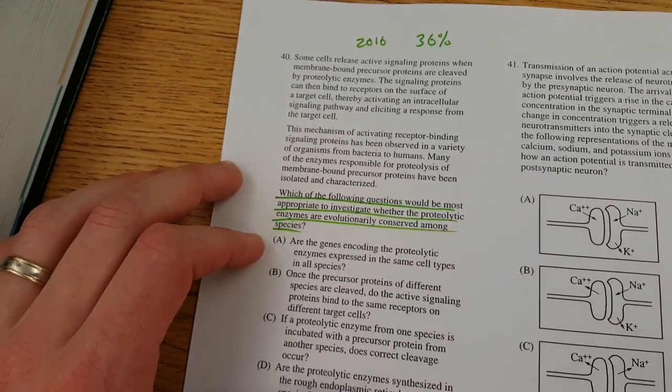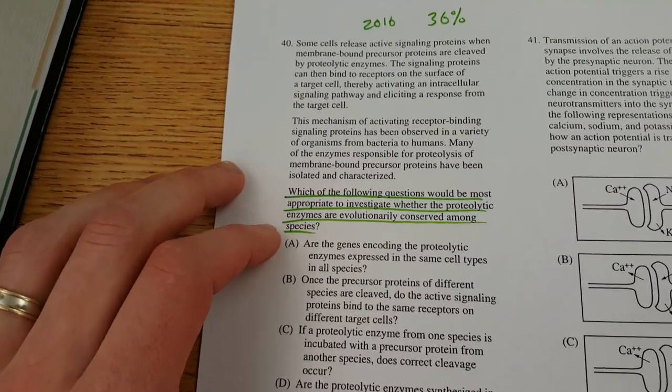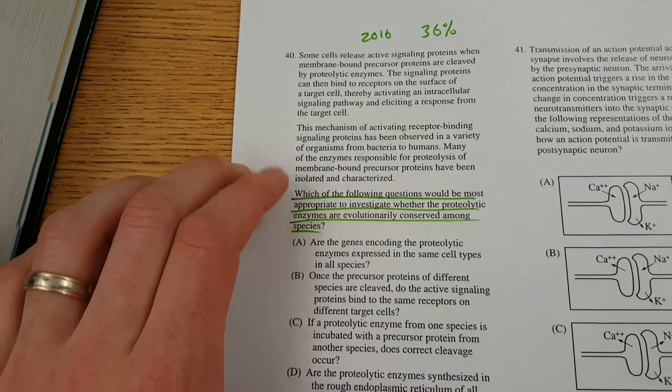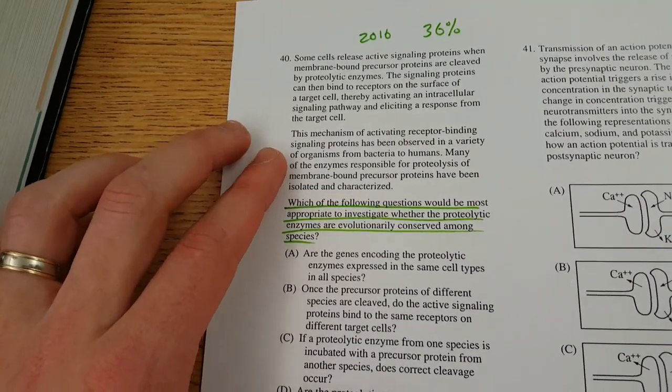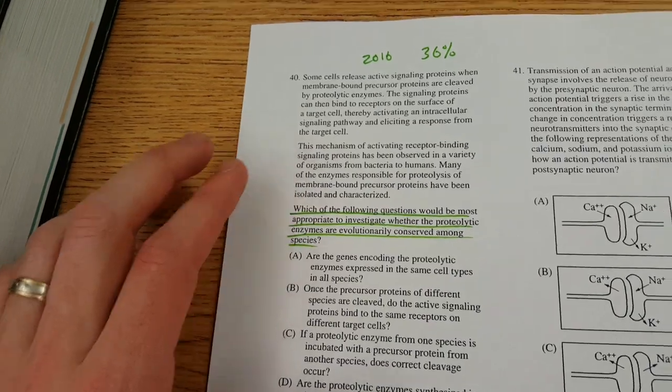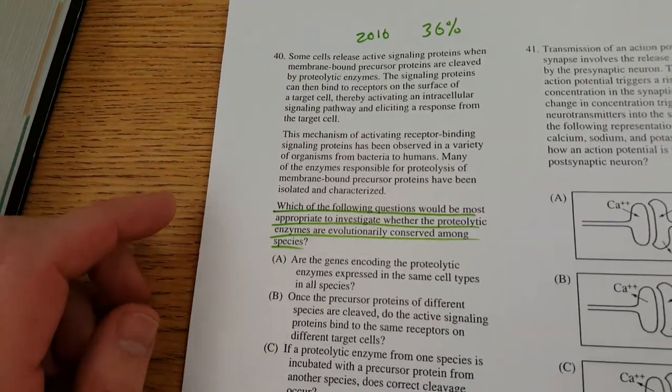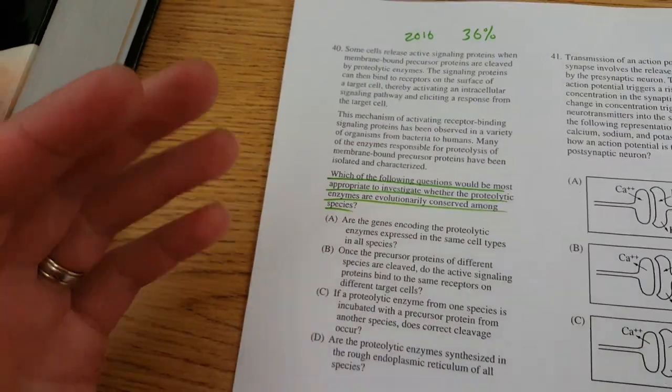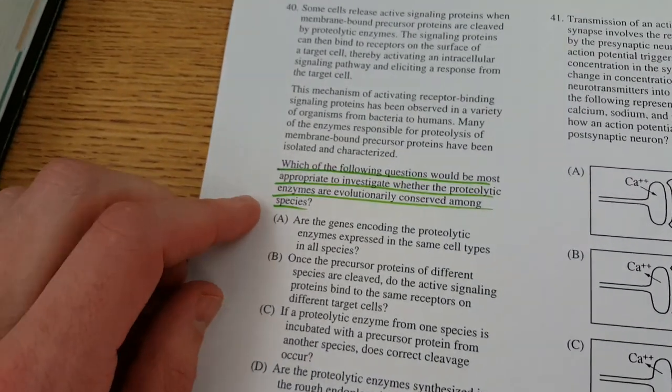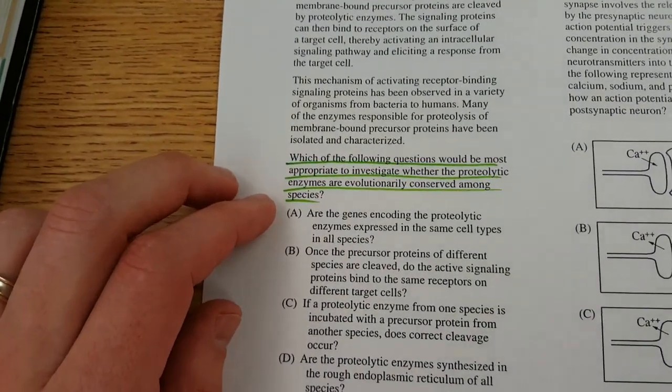Which of the following questions would be most appropriate to investigate whether the proteolytic enzymes are evolutionarily conserved among species. Being conserved in evolutionary terms means that all or a lot of species share the trait, or in this case, the production of the enzyme, and really it's the function of that enzyme. Do they have the enzyme, and is the function that it serves in all those species the same? And we know we have a lot of examples of these. Cell respiration enzymes are highly conserved among most organisms, for example. So not only are they found in all organisms, but they're used in the same way in all of those organisms.